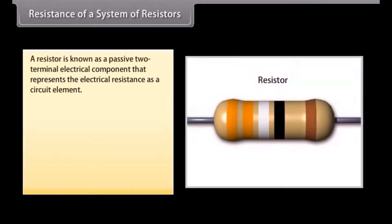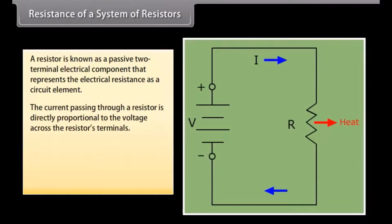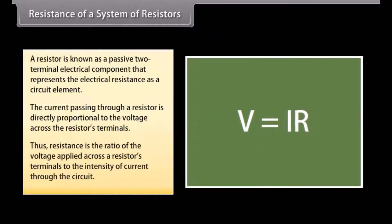A resistor is a passive two-terminal electrical component that represents the electrical resistance as a circuit element. The current passing through a resistor is directly proportional to the voltage across the resistor's terminals. Thus, resistance is the ratio of the voltage applied across a resistor's terminals to the intensity of current through the circuit.